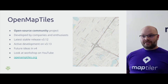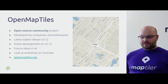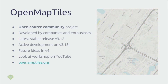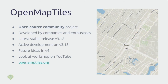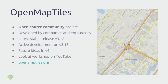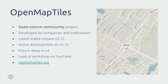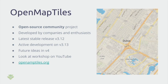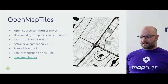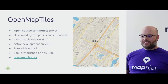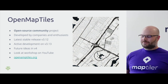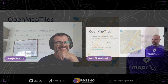To summarize: OpenMapTiles is an open source community project developed by companies and map enthusiasts. The latest stable release is 3.12 and we are working on 3.13. If you have any ideas for future release version 4, please write an issue on GitHub. Look at our YouTube channel or openmaptiles.org for more information, and thank you for your attention — I will be happy to answer any questions.